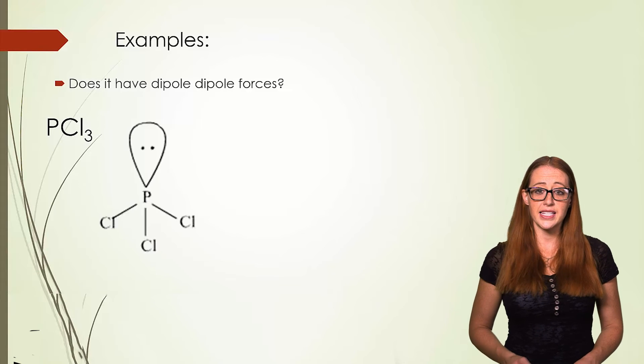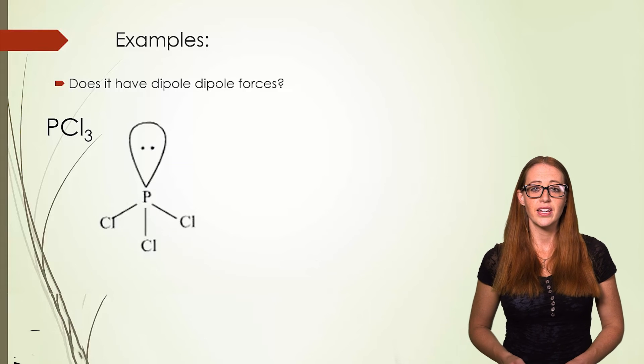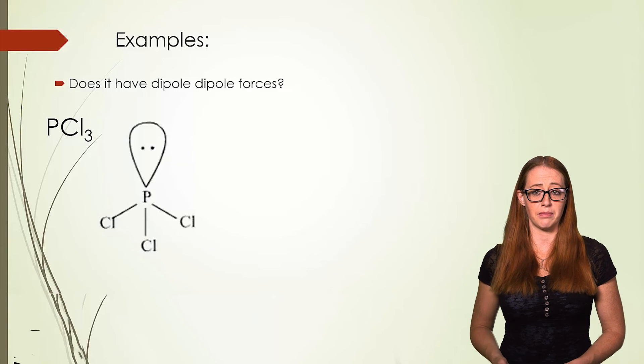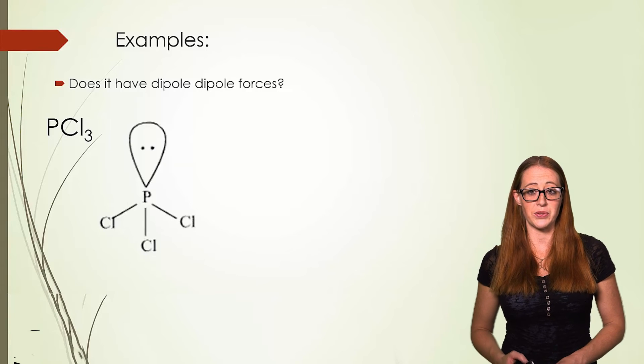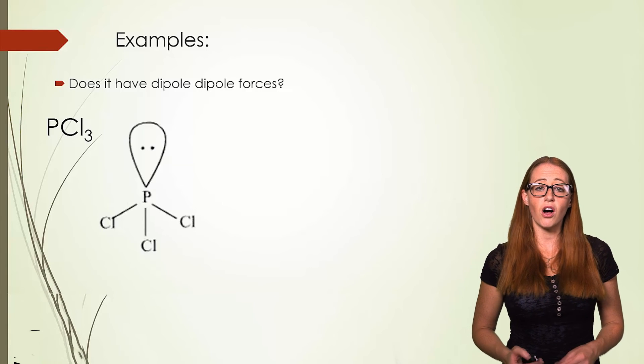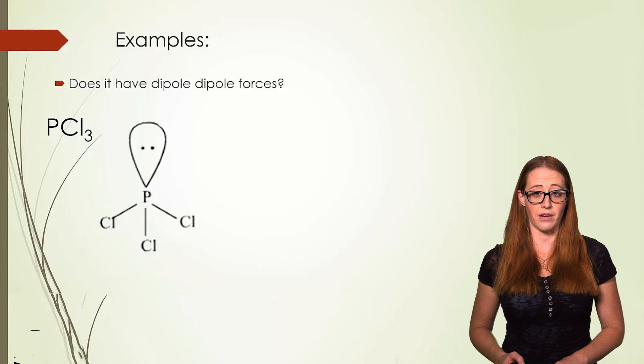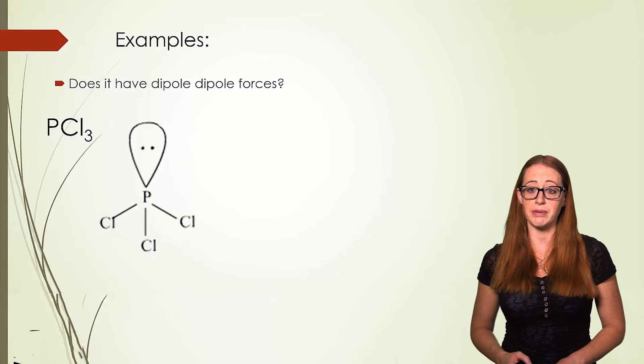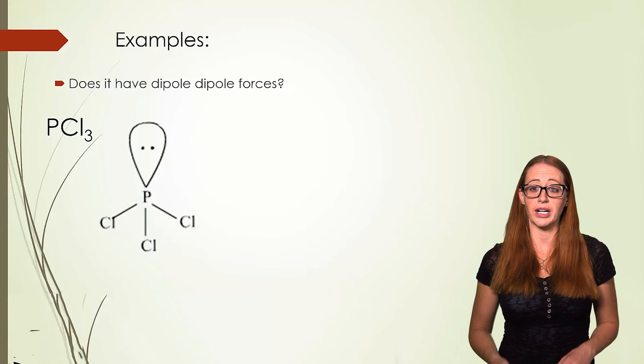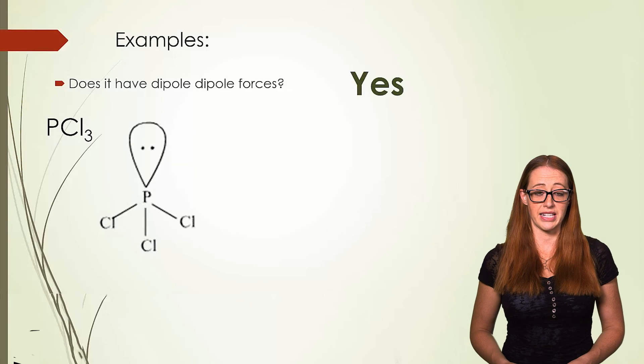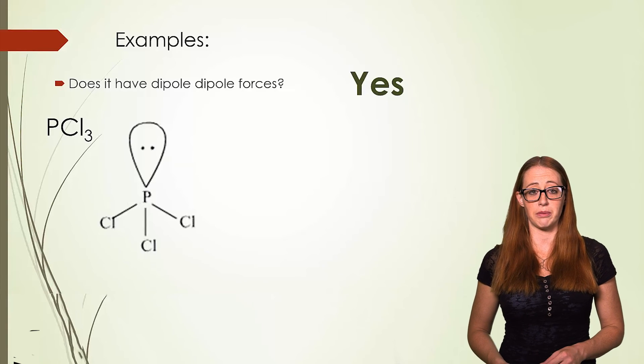PCl3 is a tetrahedral molecule, or a tetrahedral electron geometry molecule. This makes it trigonal pyramidal as a molecular geometry. Remember to go back in the videos if you don't know how to do that. Because all three of these bonds are polar, and they do not cancel themselves out, this means that this is going to be a polar molecule. Polar molecules have dipoles, and therefore, PCl3 does have a dipole. Because it has a dipole, it also has dipole-dipole forces.